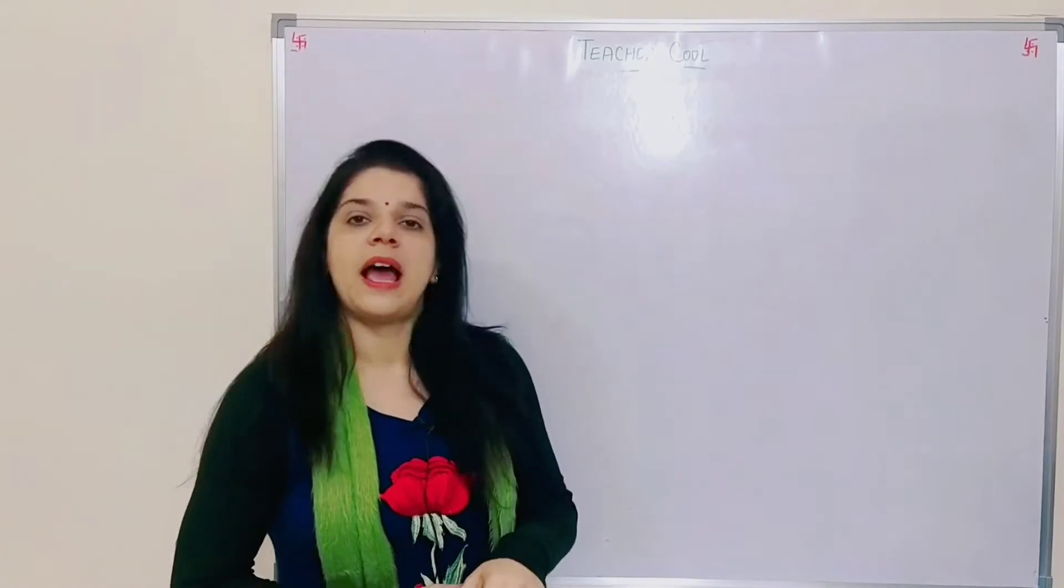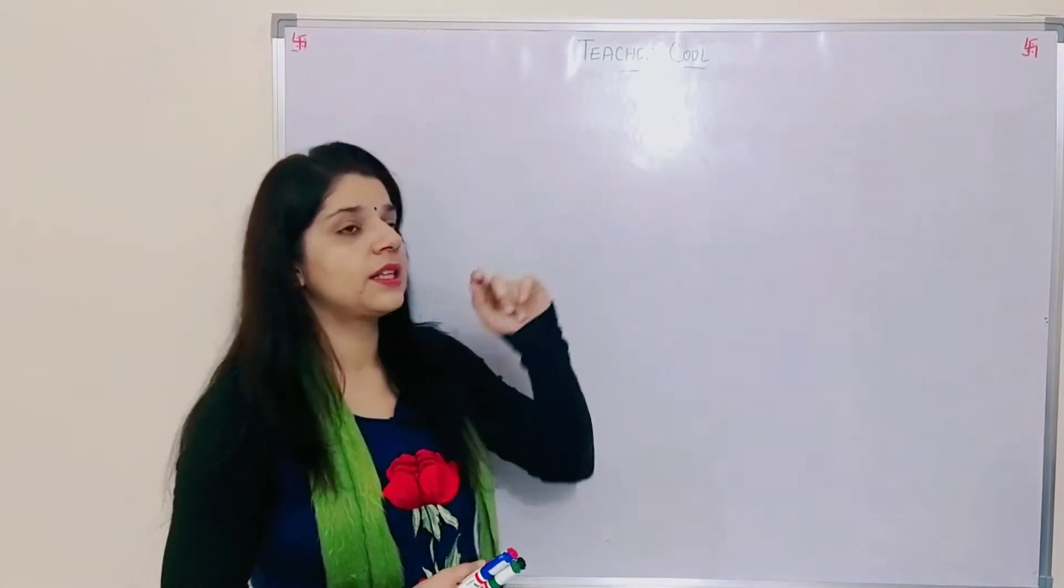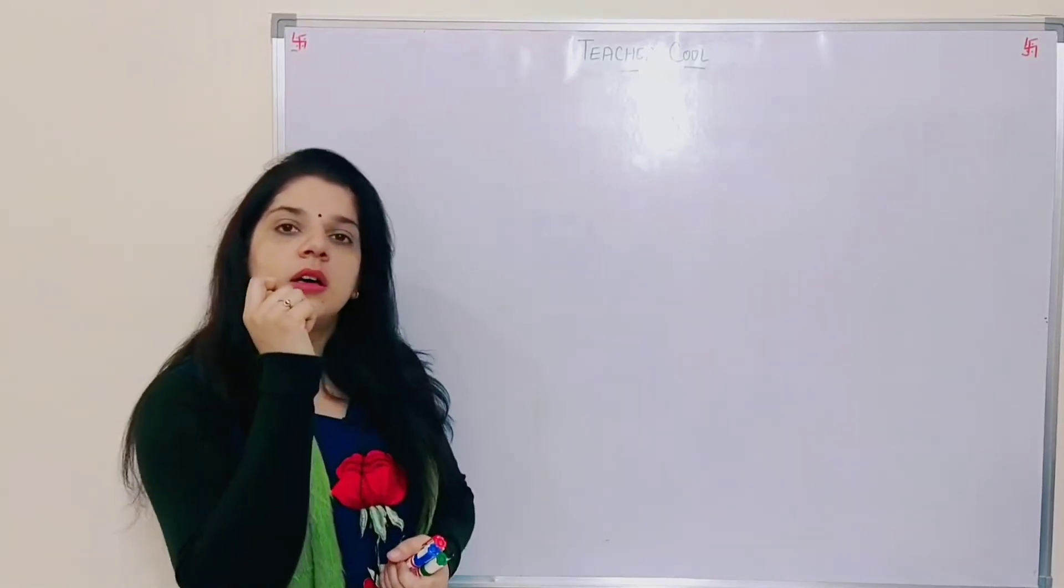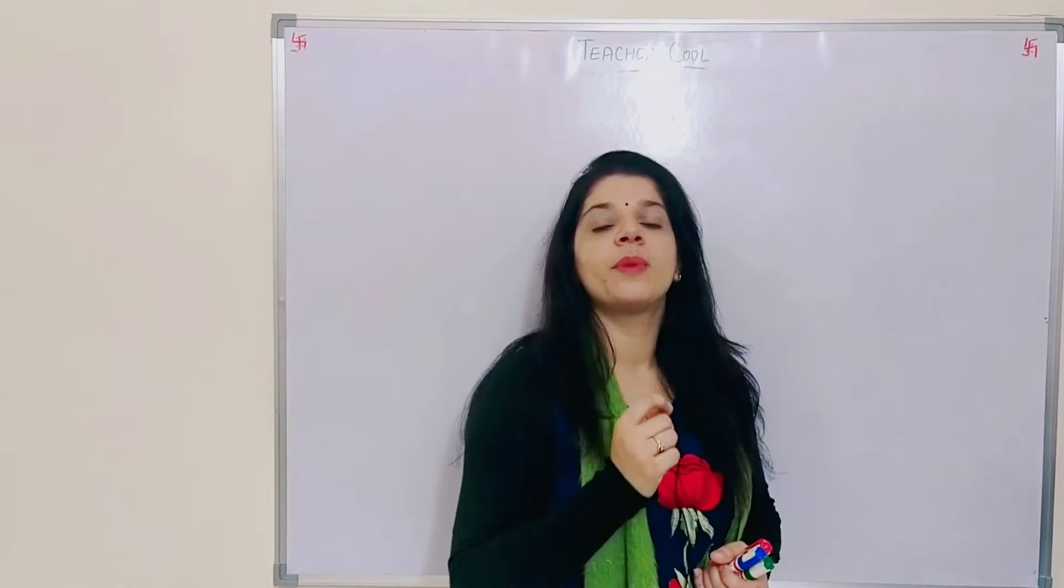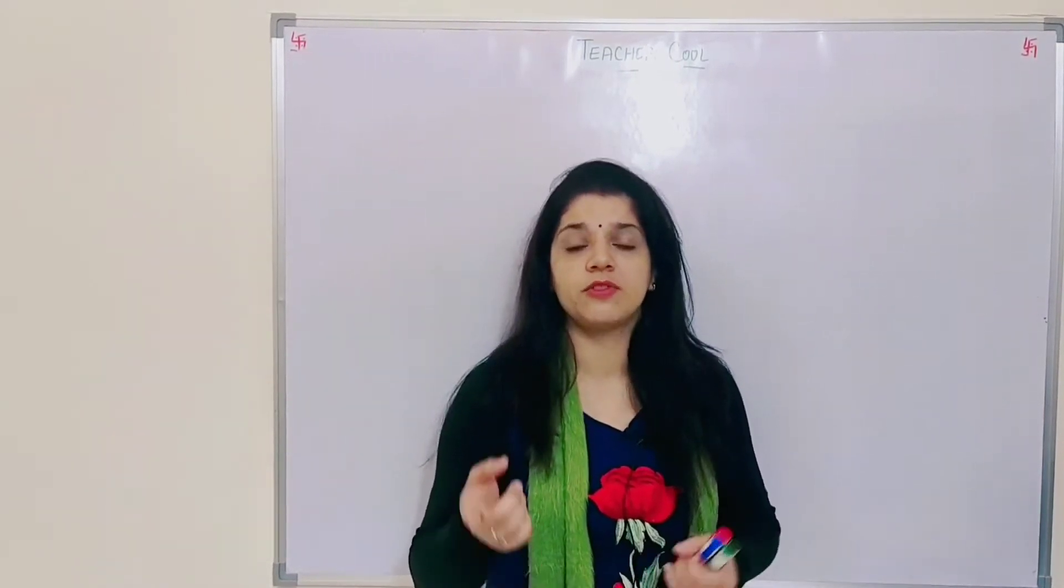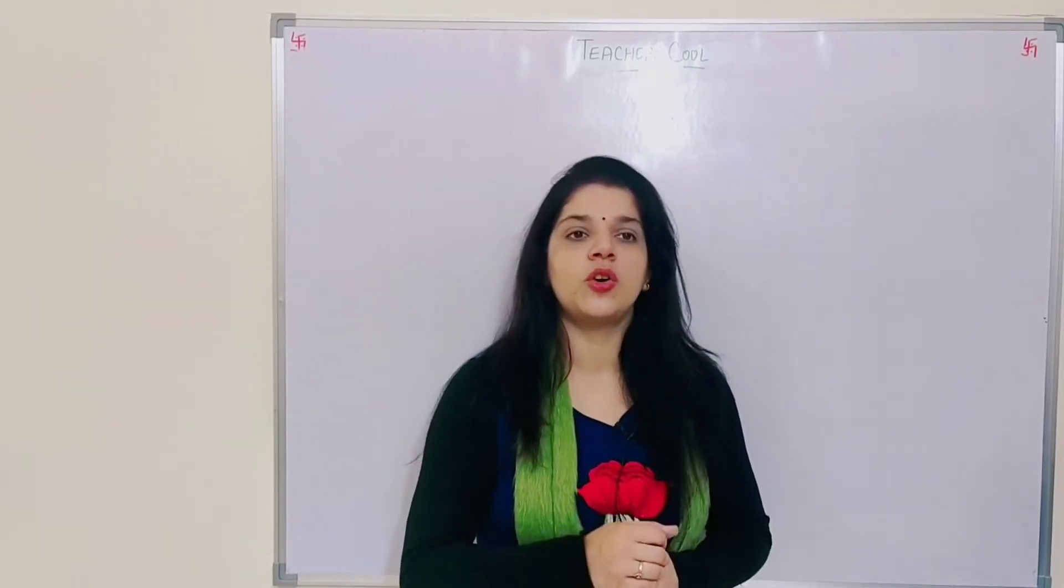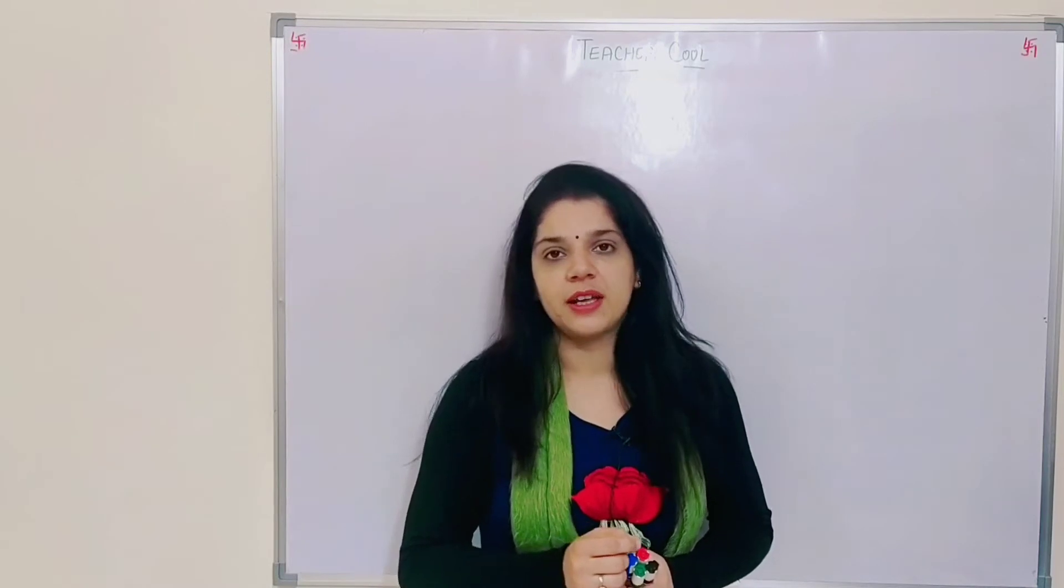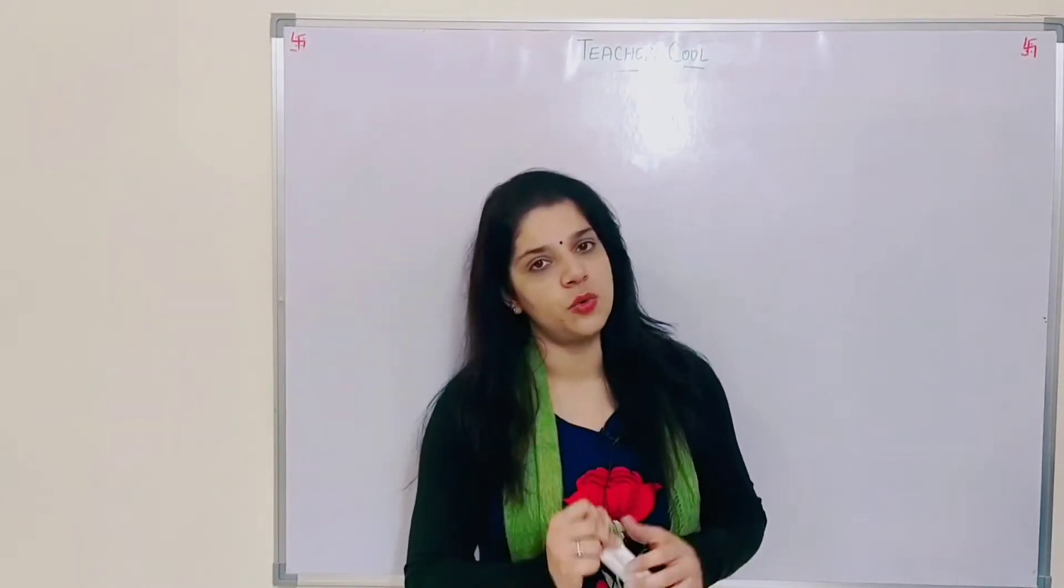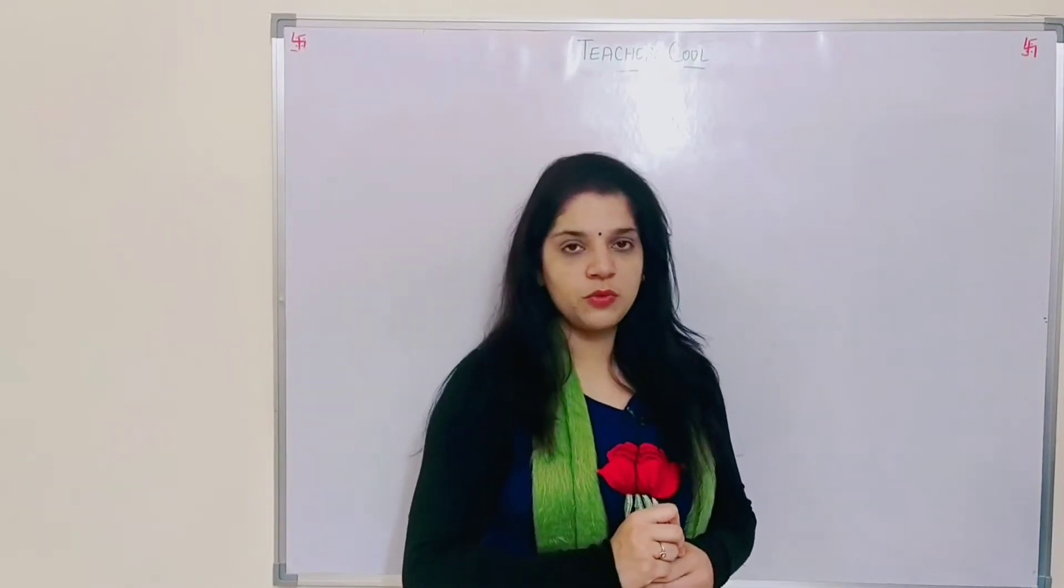In the previous lecture, we also covered Jacobian, which determines whether the conversion of my coordinates from one to another generalized coordinate system is valid enough. The procedure to verify that conversion is the Jacobian, through which the determinant of Jacobian should not become zero. Let's move forward.